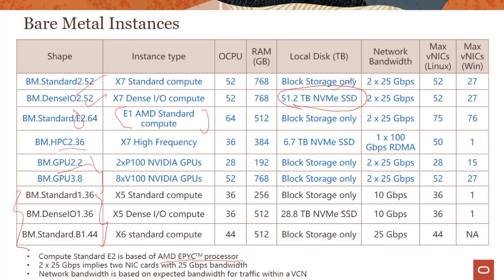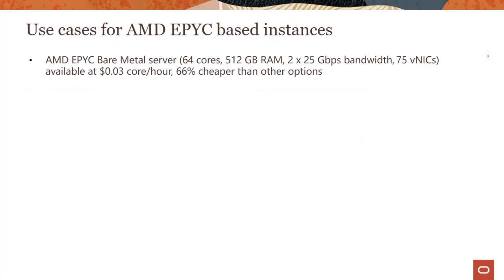One question that comes up all the time is: what is an OCPU? In the case of Oracle, an OCPU provides CPU capacity equivalent to one physical core of a processor with hyper-threading enabled. You can go and check this and get more details in the documentation.